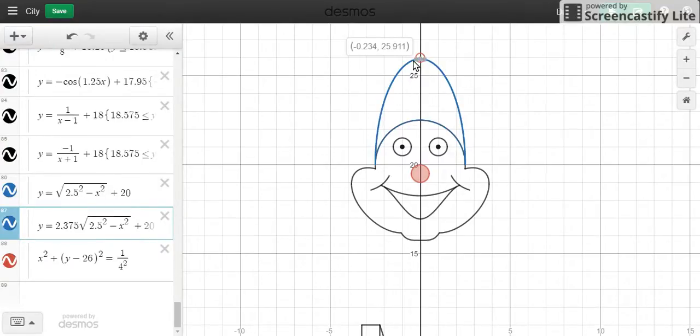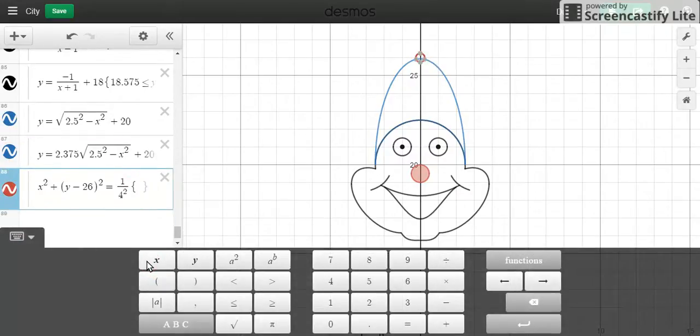We want the ball to be over the line, not intersecting it. So we're just going to get the Y value over here, which is 25.911.